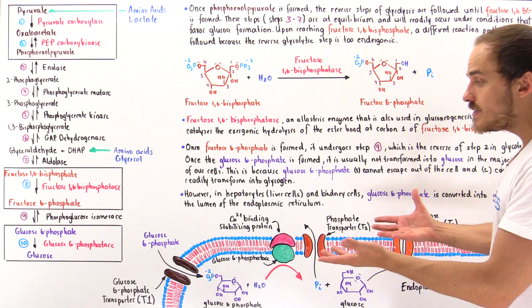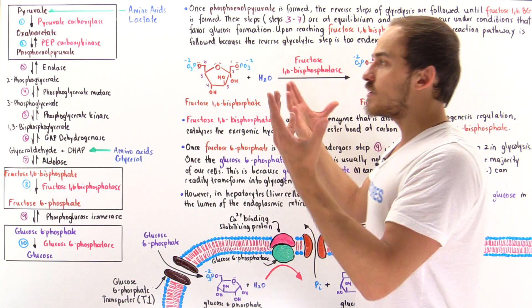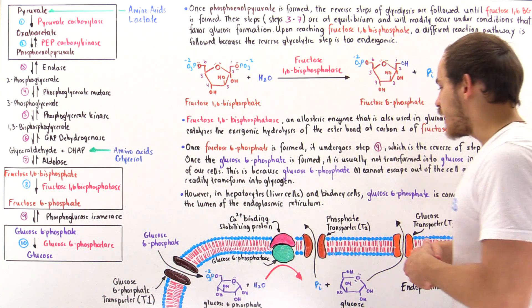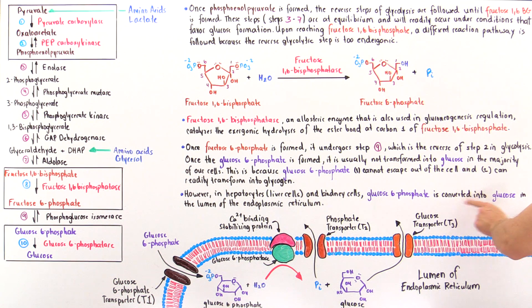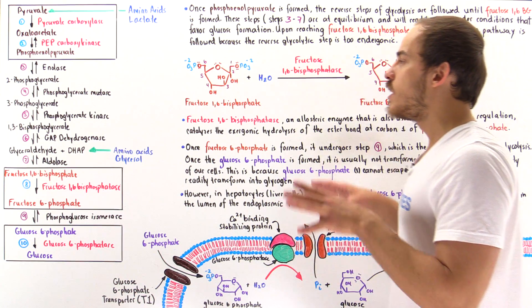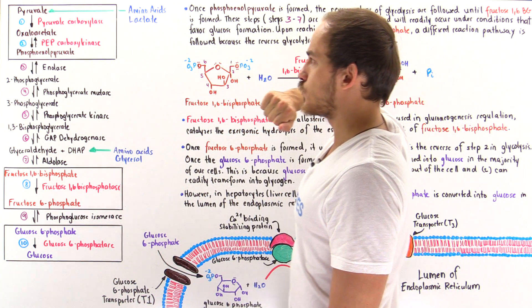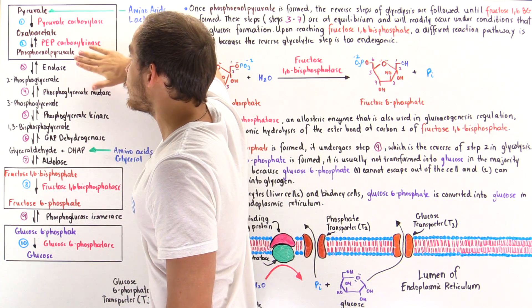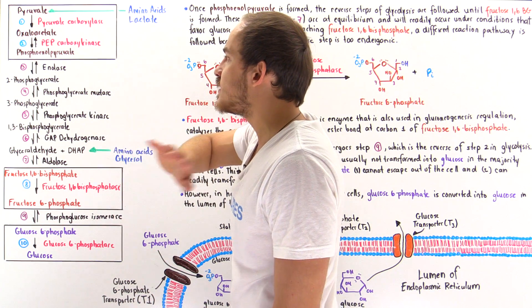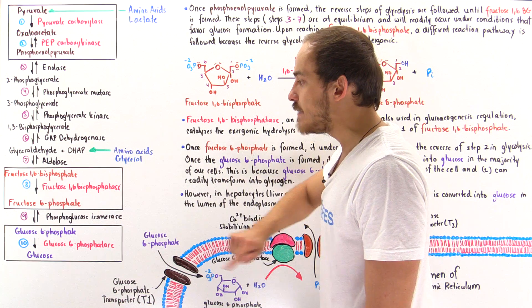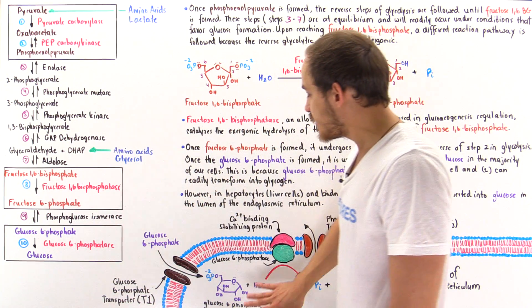To summarize: step one takes place in the mitochondrial matrix; step two in the cytoplasm; both differ from glycolysis. Steps three through seven are identical to glycolysis steps. Step eight is different; step nine is the same; step ten is different. Steps eight and nine take place in the cytoplasm, while step ten takes place in the lumen of the ER.